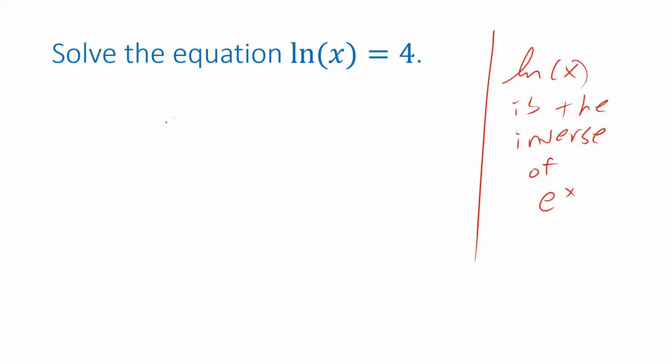So if I exponentiate both sides, e to the natural log of x equals e to the 4. Because they're inverses of each other, this composition, e raised to the natural log of x, this is the logarithmic function inside of an exponential function. These cancel out, giving us just x on the left side.